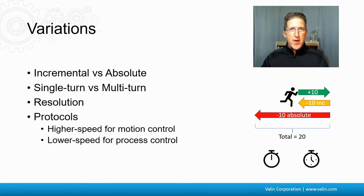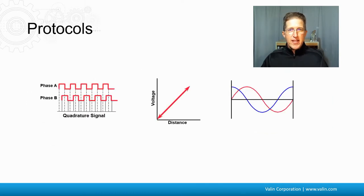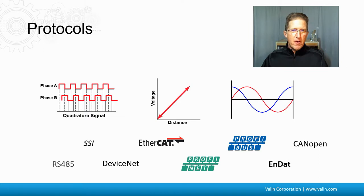Protocols. There's a bunch of different types of protocols. There's the higher speed ones for motion control. There's lower speed ones for process control. Here's three that we've talked about. The quadrature signals for incremental. Analog for like 0 to 10 volts, like a tachometer. And then there's like sine, cosine types that are analog. And then there's a whole bunch of different communication protocols. EtherCAT, Profibus, ProfiNet, SSI, serial ones like RS-232 and RS-485. I mentioned SSI, which is based on RS-485.